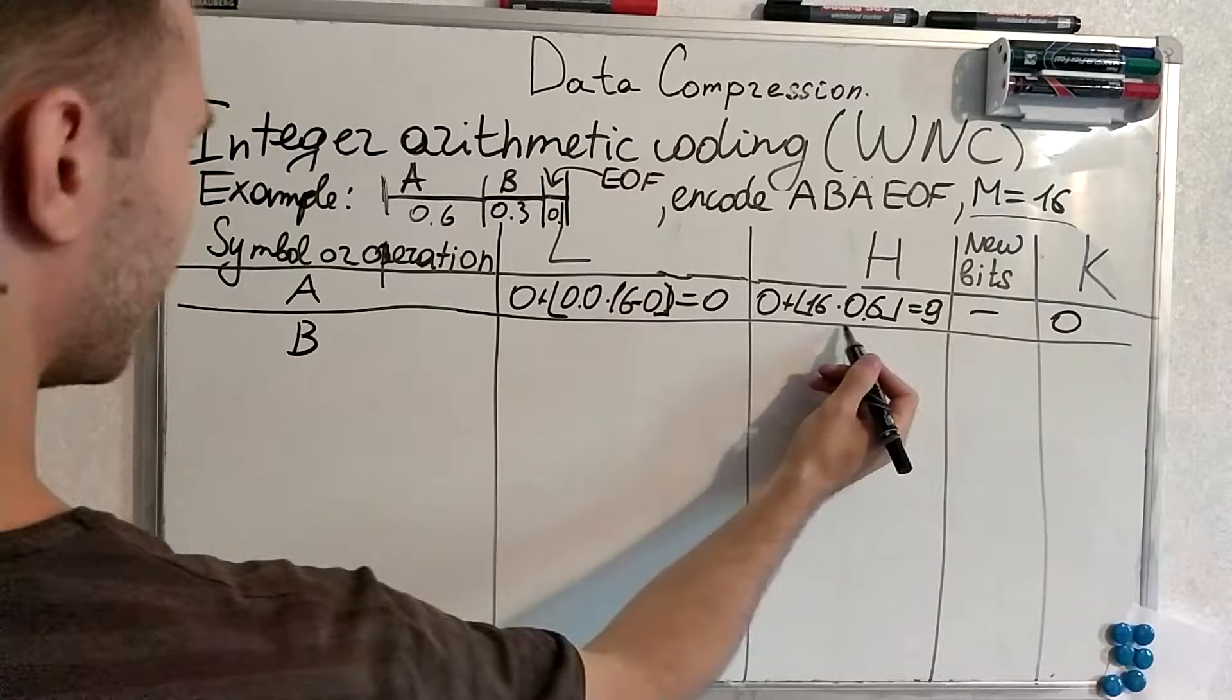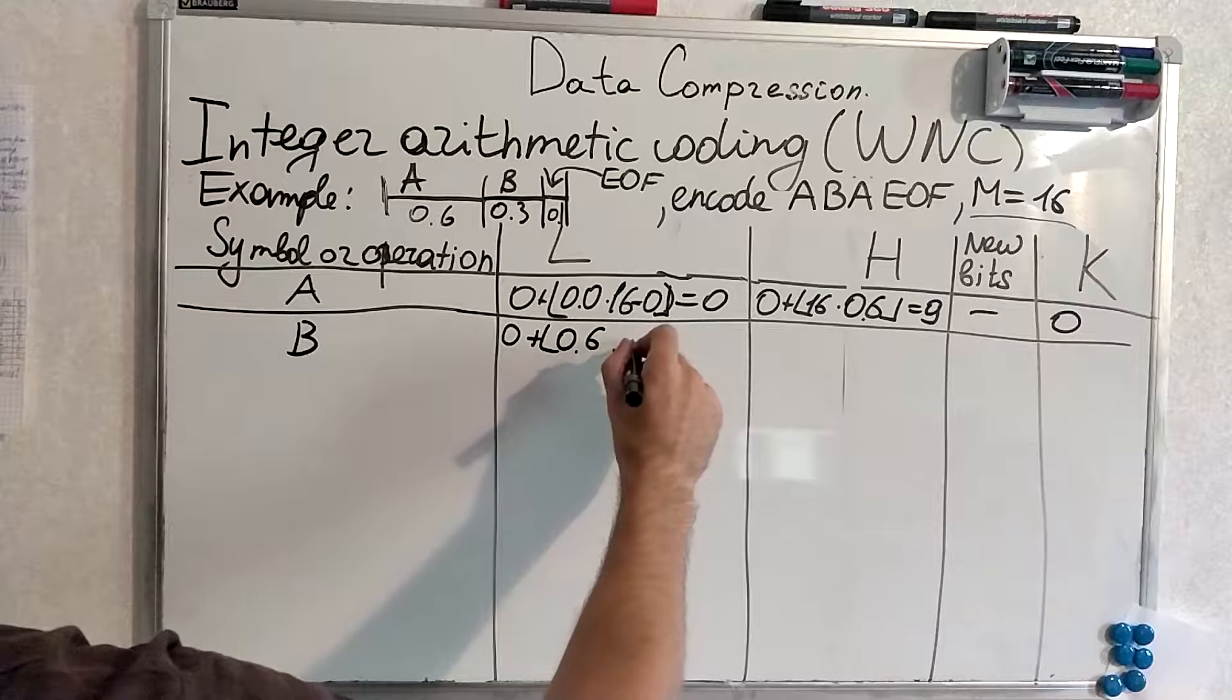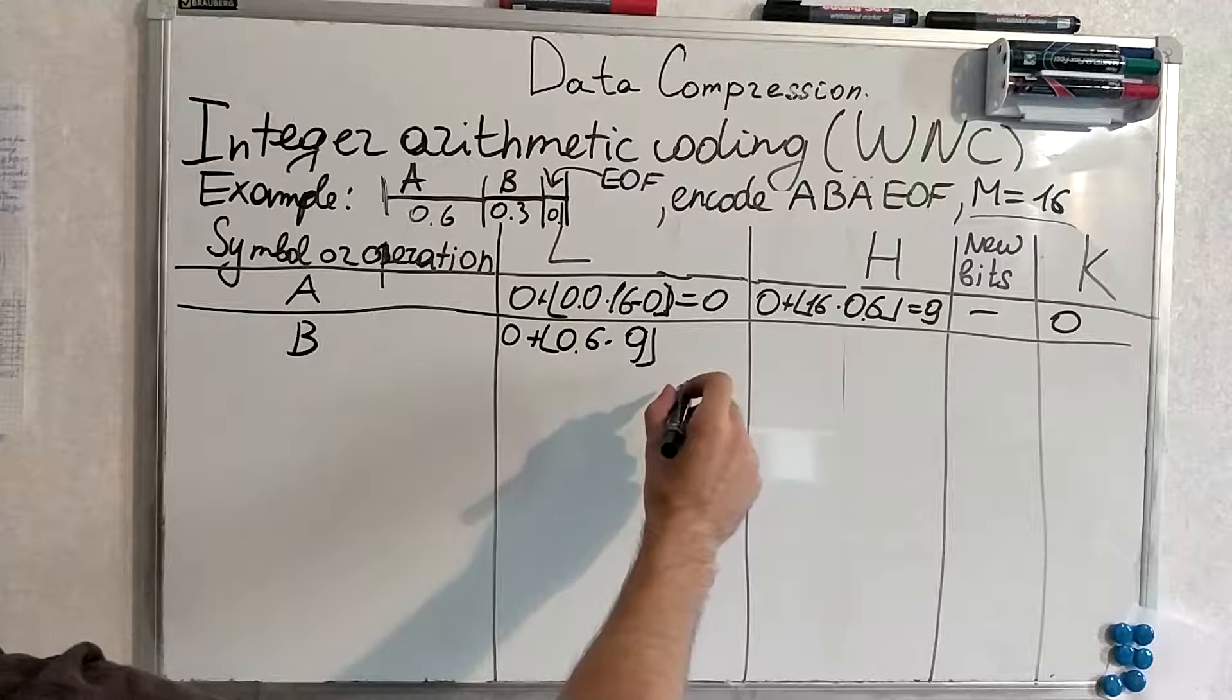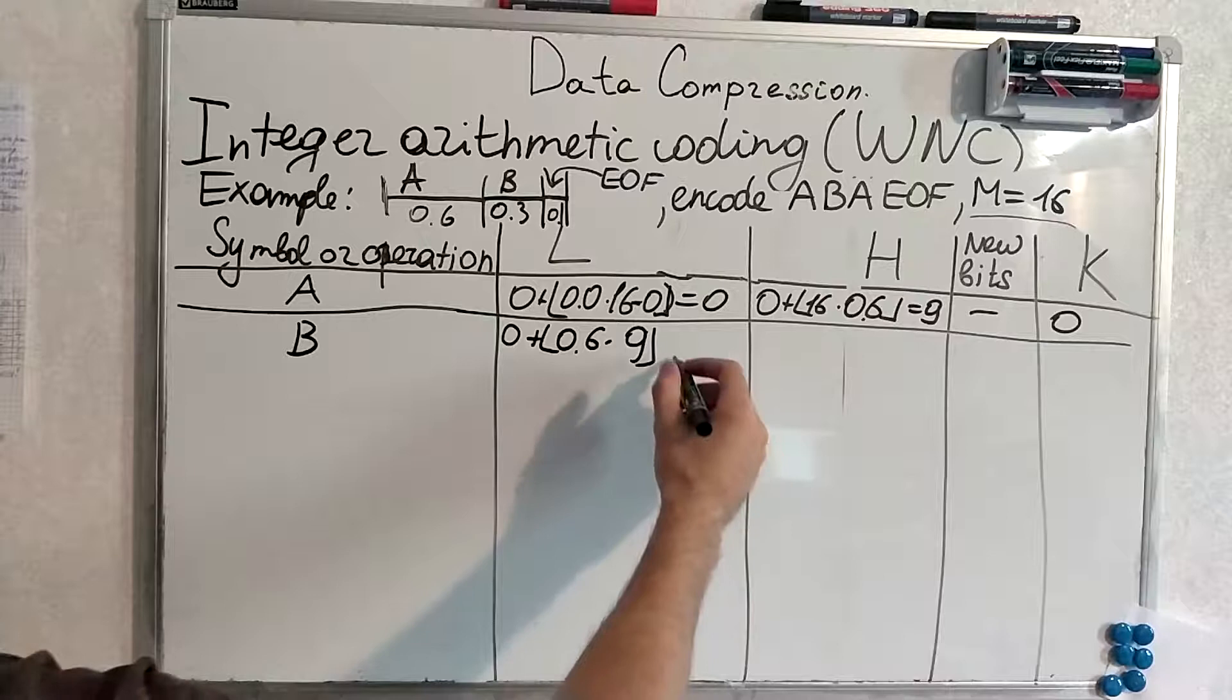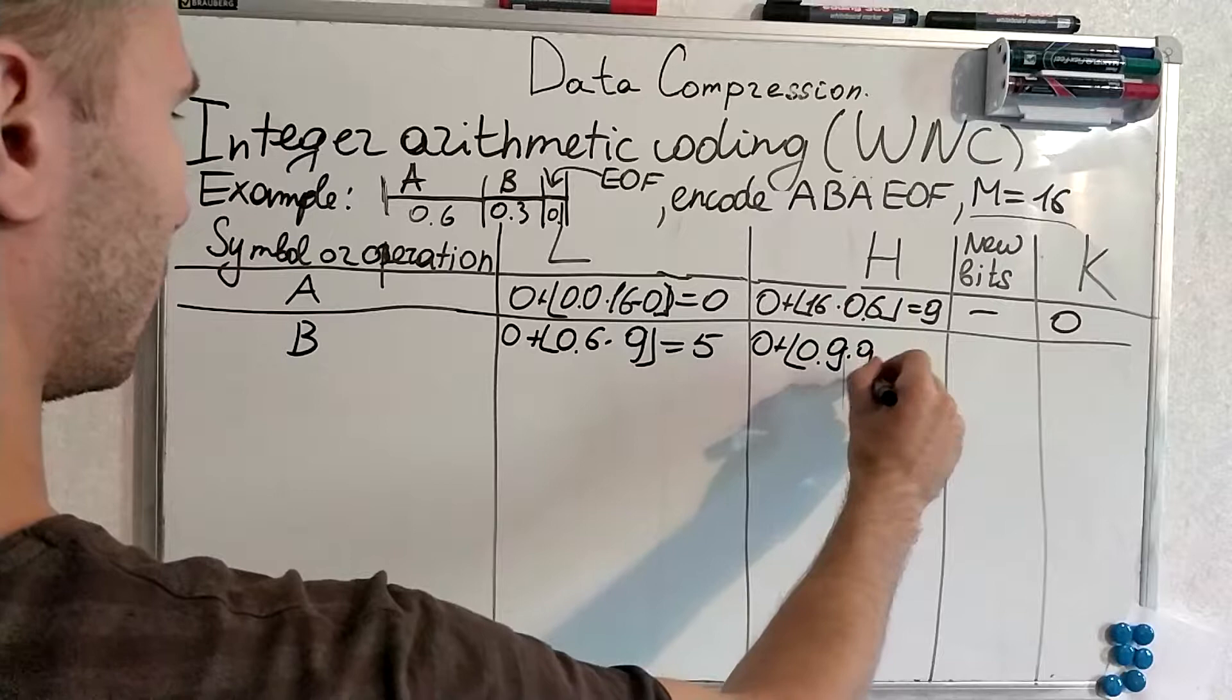Next symbol is B. So, we produce new L is probabilities up to B multiplied by the... equals 5 equals 8.